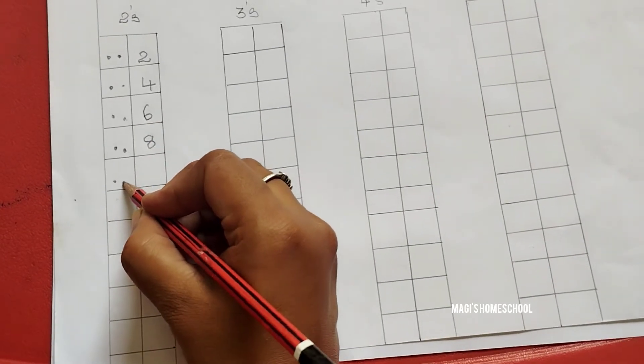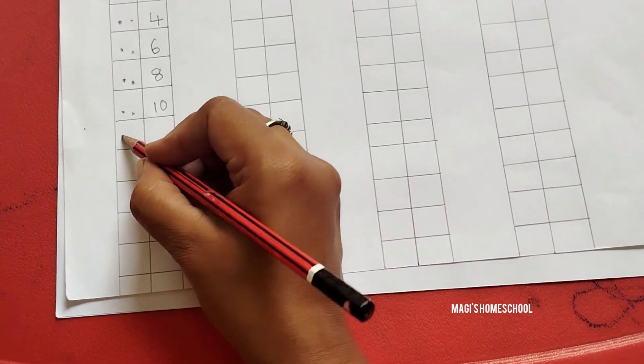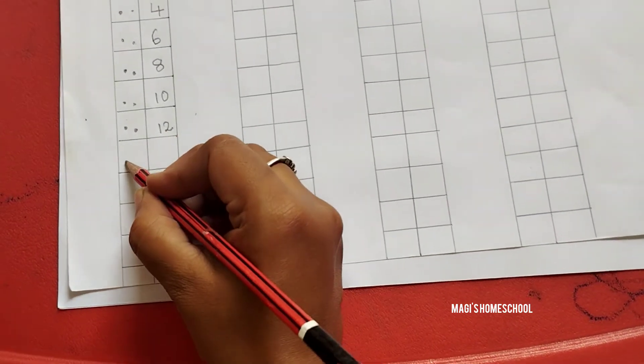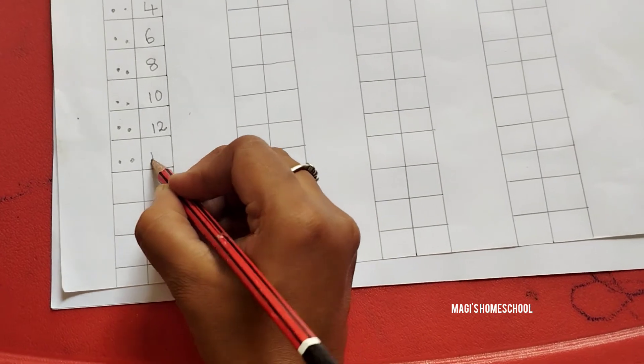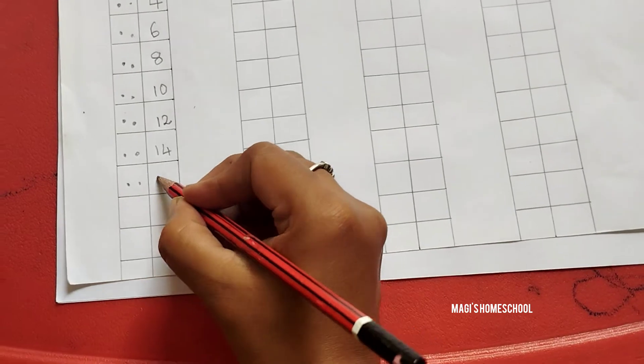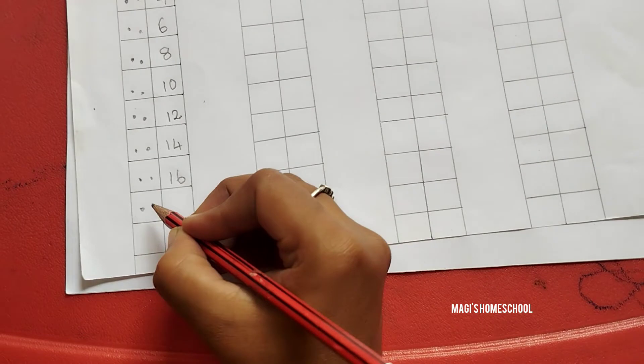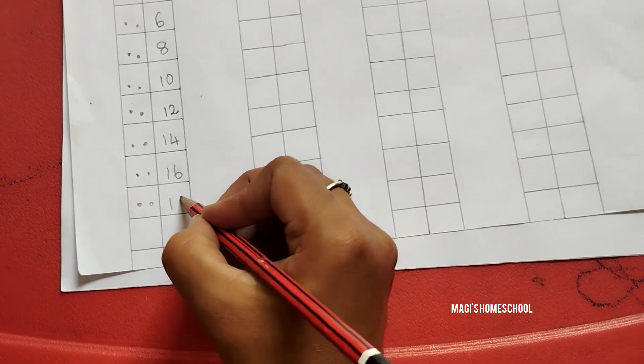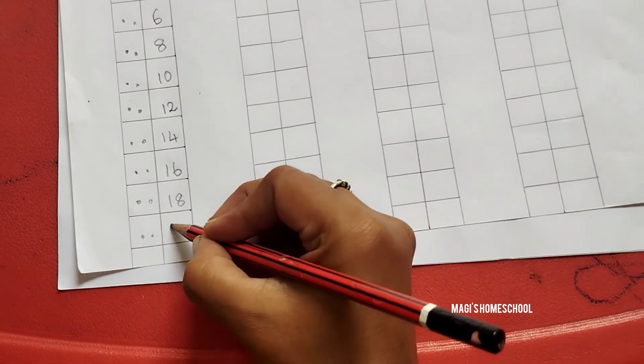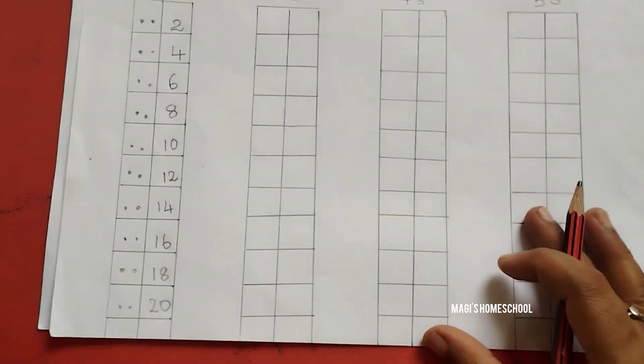Every time you are going to add 2 dots and add the previous number. After 6 comes 8, after 8 comes 10, after 10 comes 12, after 12 comes 14, after 14 comes 16, after 16 comes 18, after 18 comes 19, 20. So you are going to add 2 to all the previous numbers.